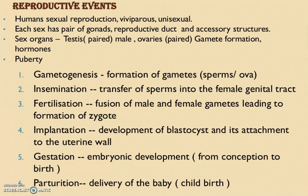Implantation is the development of the blastocyst, or embryo, and its attachment to the uterine wall. These processes all take place in the female reproductive system. Gestation is the nine-month pregnancy period — that is, the embryonic development period. Parturition is the delivery of the baby; childbirth is called parturition.